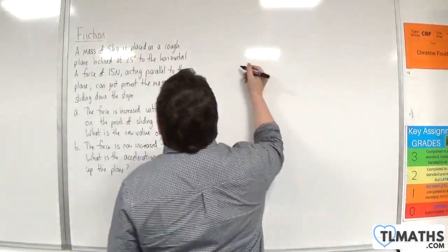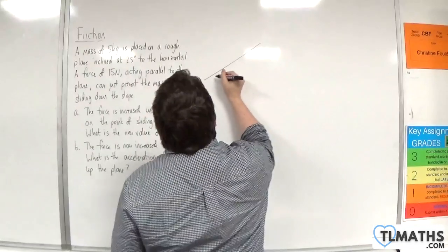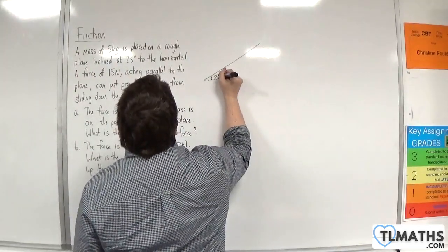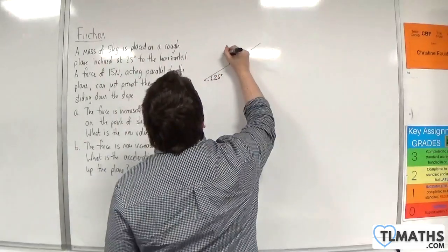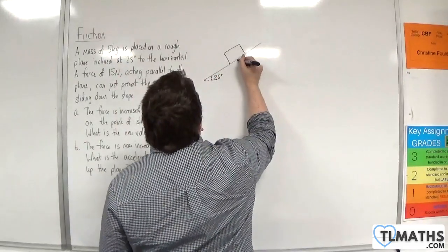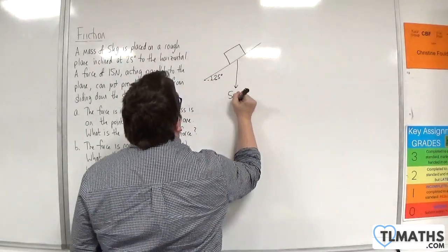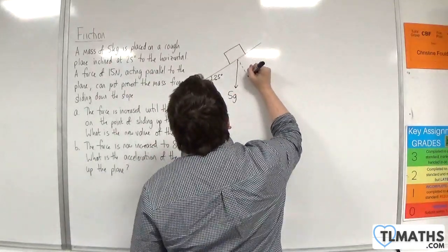So let's draw a diagram so we can visualize what's going on. Here's my slope. It's inclined at 25 degrees to the horizontal. Here is the mass, or the block, and it has a mass of 5 kilos, so it's got a weight of 5g.